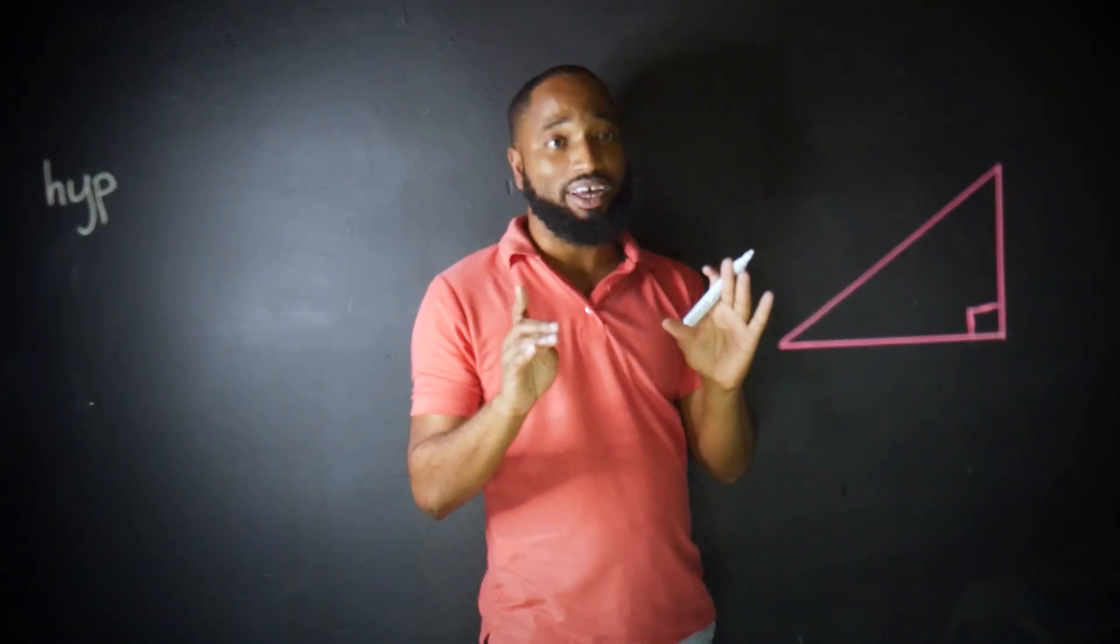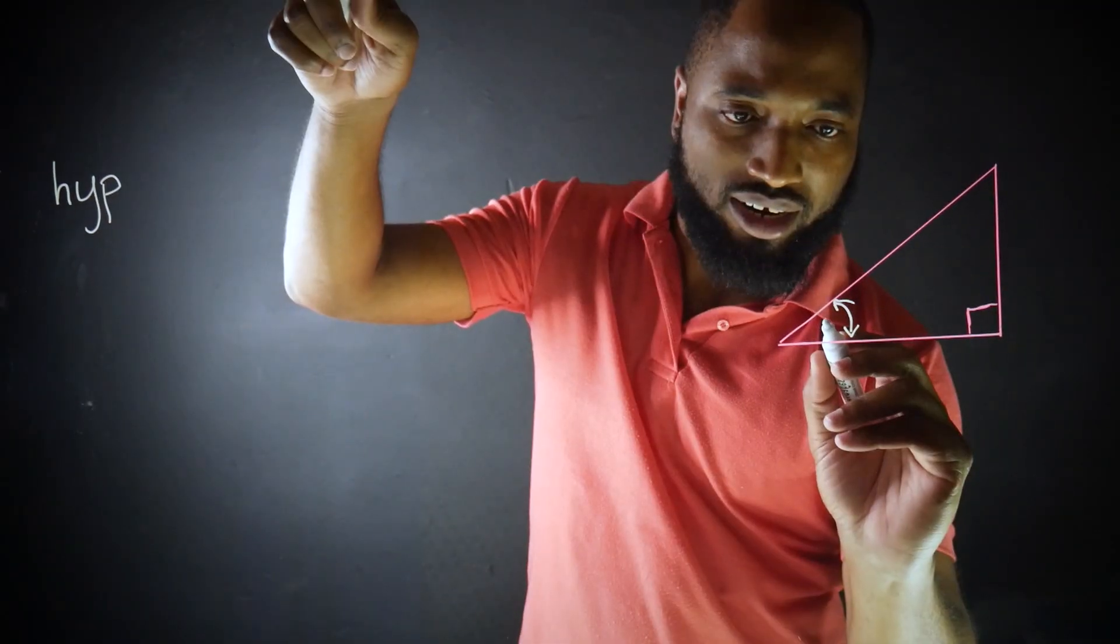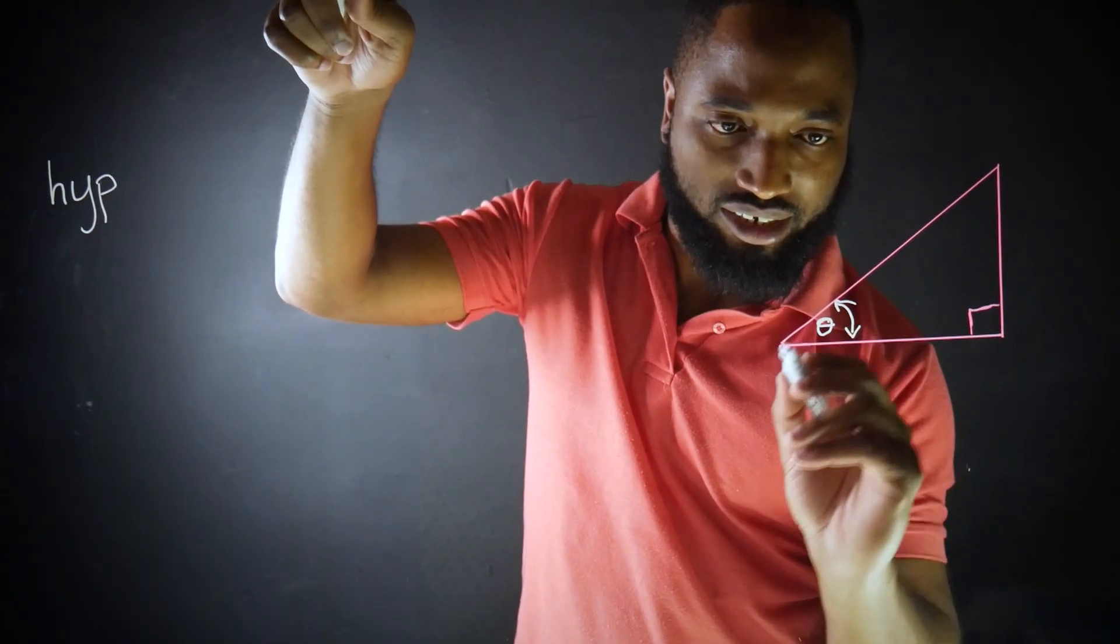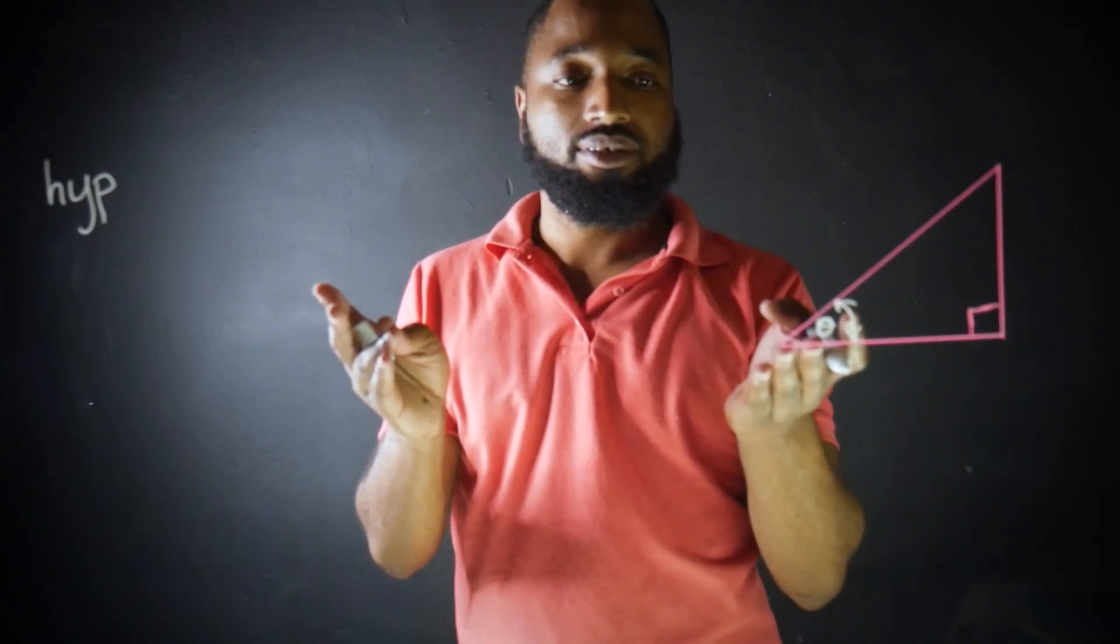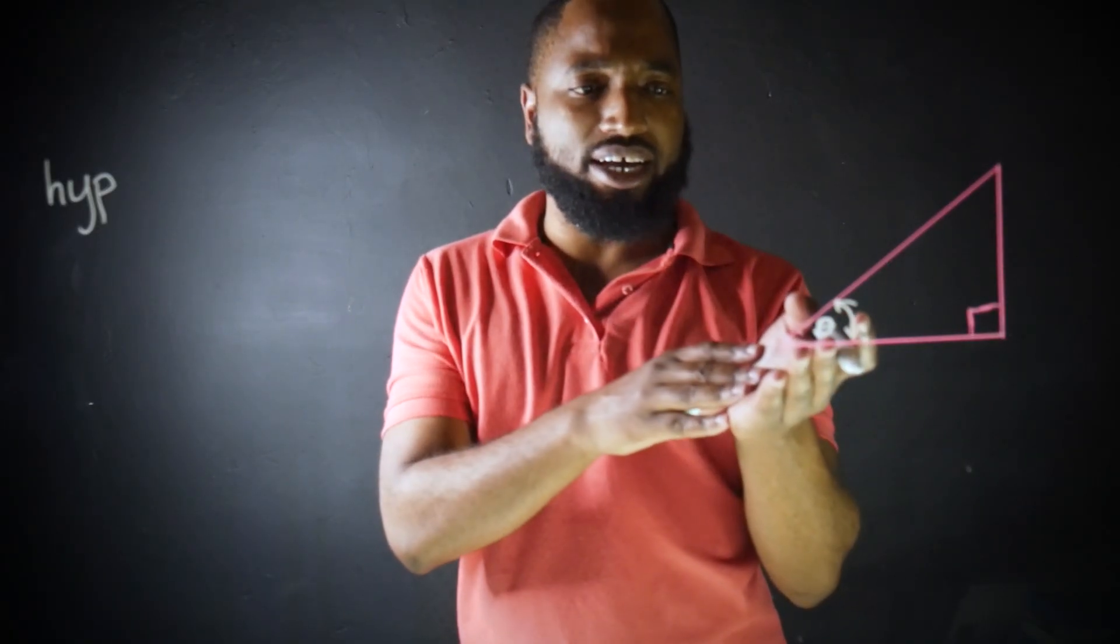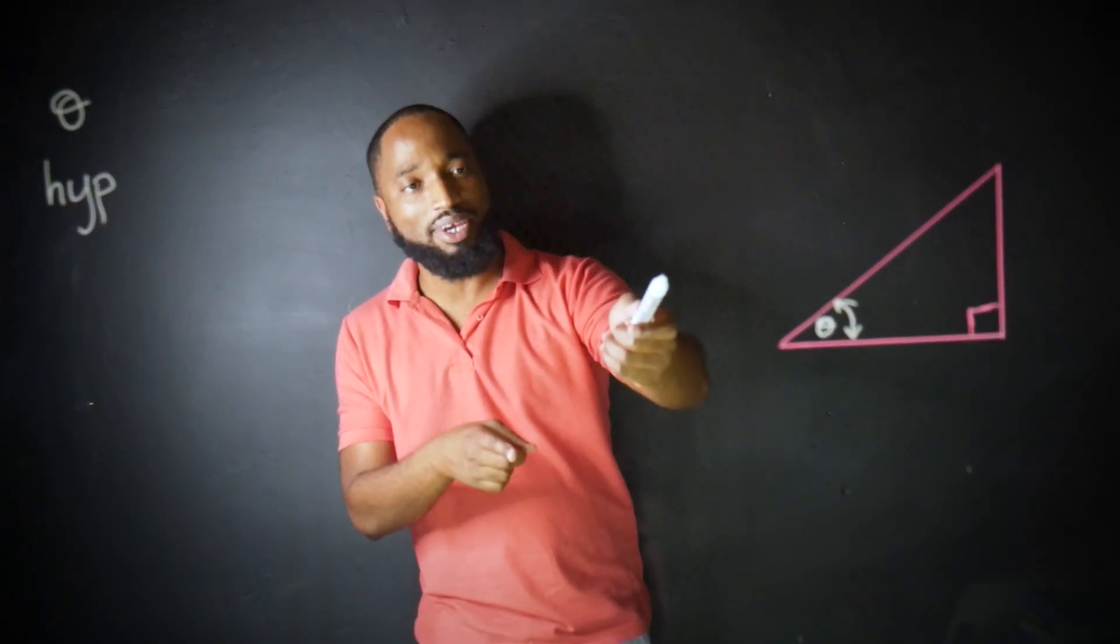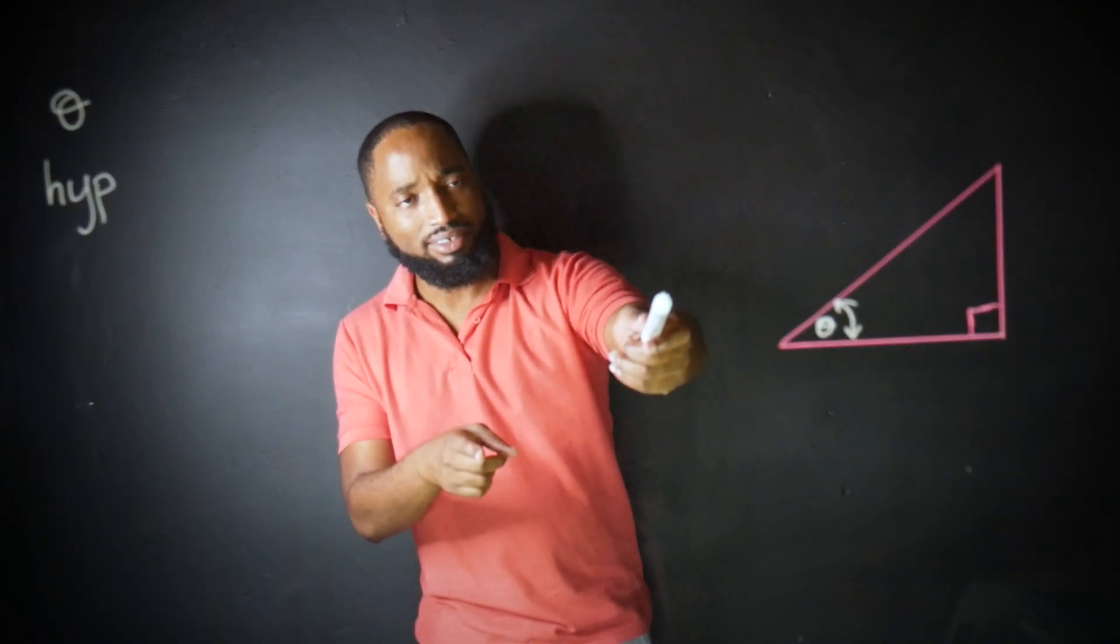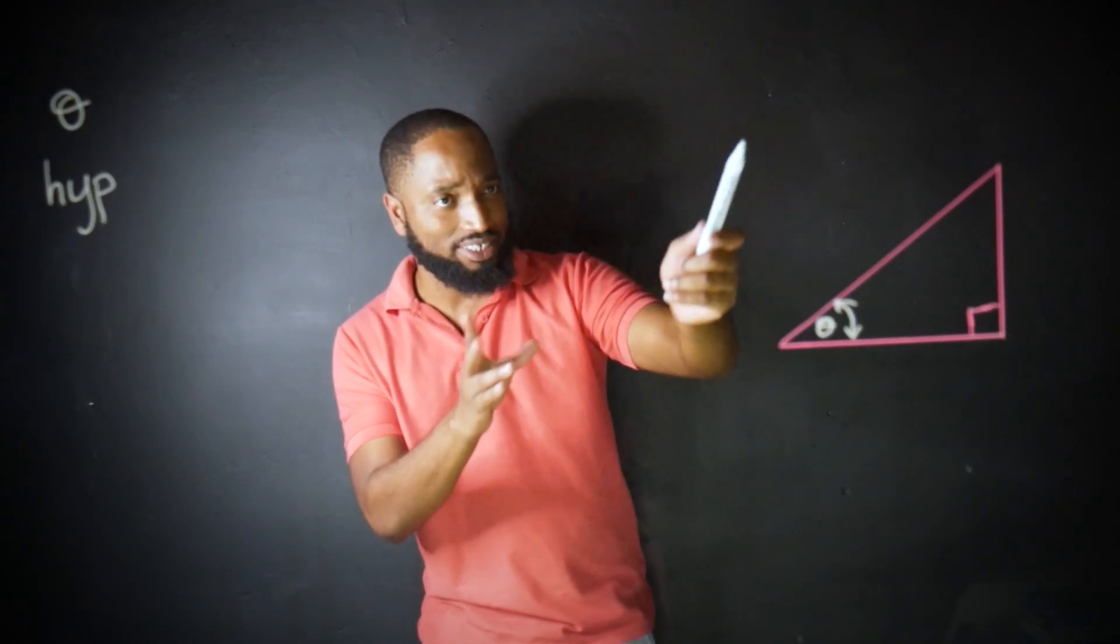Now the other two sides, the only name we've given them so far is the other two sides. Let's add in an angle. Let's call that angle theta. Theta is a symbol that looks like, well, that. We are just using it to mean that angle.